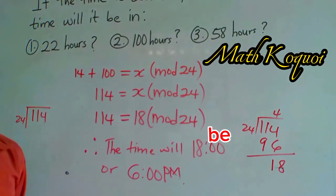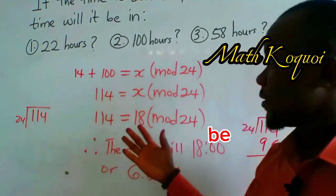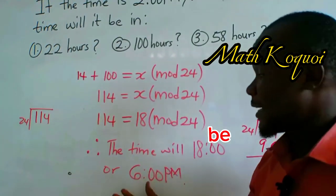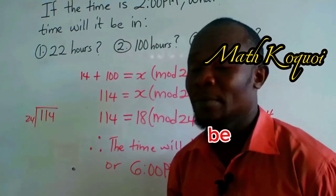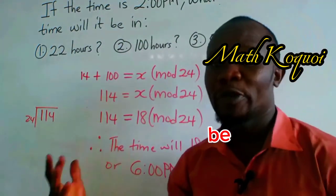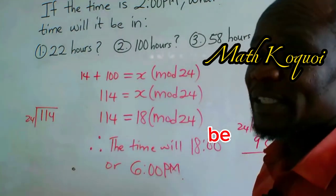Thank you again for watching. Don't forget to keep following MathRoquet, and don't forget to share this video. This is the answer, 6 o'clock PM. If the time now is 2 o'clock PM, what time will it be in 100 hours time? In 100 hours time, the time will be 6 o'clock PM.